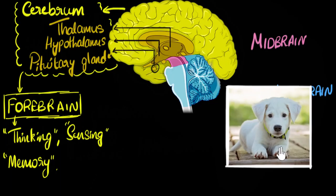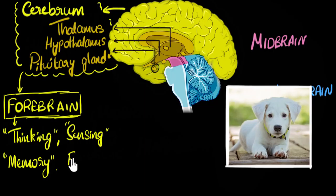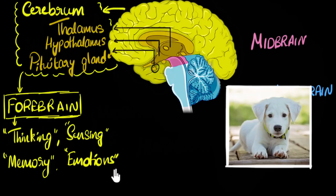Now, when you look at this puppy, some kind of emotion comes in — you may feel 'aw, what a cute puppy,' you may feel happy. Maybe if I showed you a scary picture, you would experience fear. So all the emotions — including love — come from your forebrain. Love does not come from the heart; it comes from your forebrain.